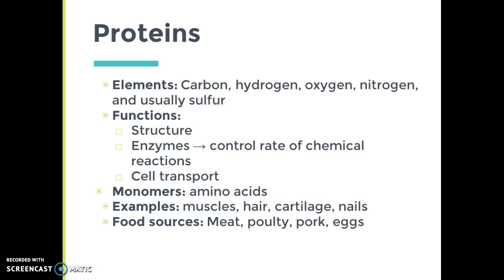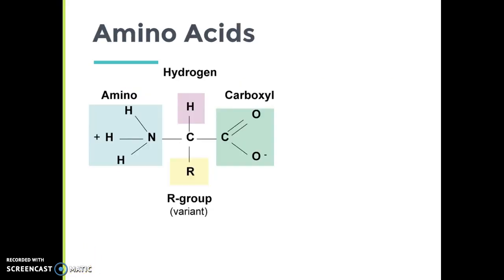Common food sources that we can get protein from include meat, poultry, pork, and eggs. Here we can look more closely at this monomer, the amino acid.